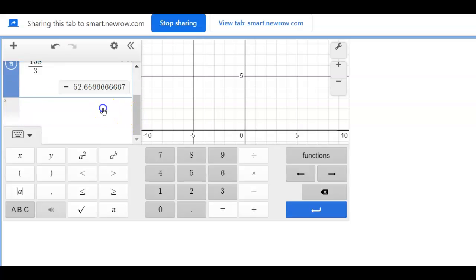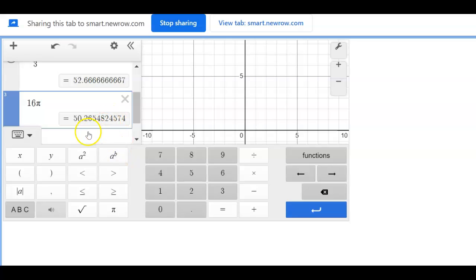One of them is already a decimal, so we just need to do 16 pi. Where is our pi key on this calculator? Here it is. 50.27, approximately.